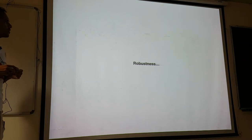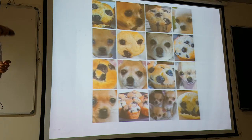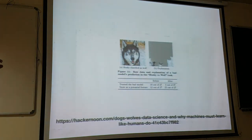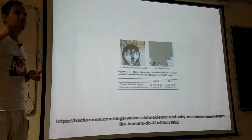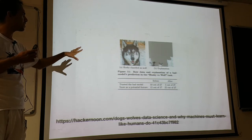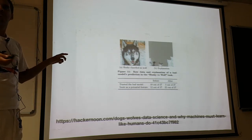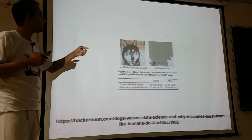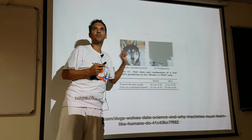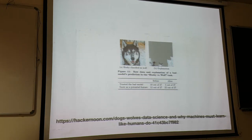Another important topic is robustness. It's easy for us to classify images, but not for neural networks. It's always important to check what a neural network is actually using for classification. In a dog vs. husky classification example, it turns out a neural network only looks at whether there is snow in the picture. That's dangerous — you trust the neural network and it computes incorrect results.